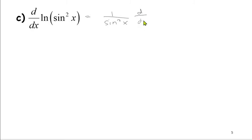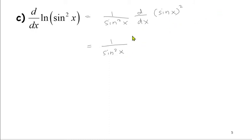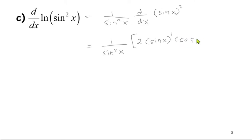And then we have to differentiate sin²x, which is the same as differentiating (sin x)². We use the power rule: bring 2 as the coefficient, rewrite the function, subtract the power by 1, and then differentiate what's inside the bracket. Differentiating sin x gives cos x.